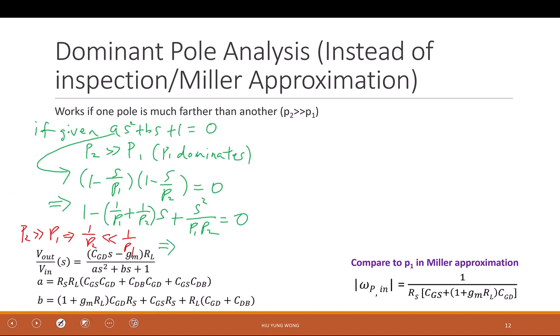So then it means I have negative 1 over P1 plus 1 over P2 equals to B. Approximately is equal to negative 1 over P1 equals to B. So B equals to what? Negative. I already give you the answer. 1 over P1.